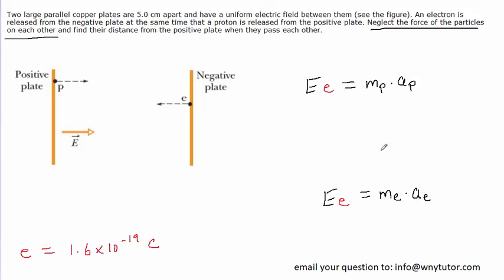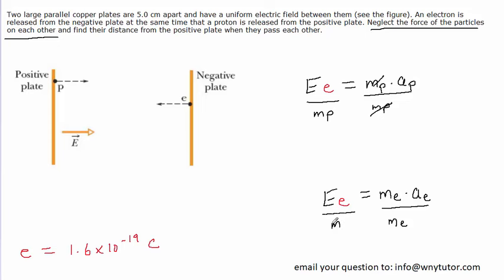It's going to be useful to solve each of these equations for the acceleration a. In the first equation, we'll divide by the mass of the proton, which cancels out the mass of the proton on that side. We'll do the same thing for the second equation, dividing both sides by the mass of the electron.